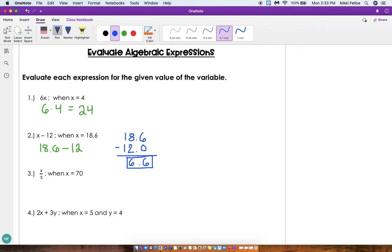Number 3: x over 5. We know that means x divided by 5 when x equals 70. So I'm going to take that 70 and substitute it in for the variable. And now I am going to do 70 divided by 5, and we know that 70 divided by 5 is 14. If you don't know that, that's okay. You can set up your long division on the right hand side and solve it this way.